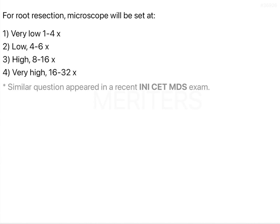For root resection, the microscope will be set at very low (1-4x), low (4-6x), high (8-16x), or very high (16-32x). In dental practice, direct operating microscopes can be configured so magnification goes up to 40x. There are three ranges of magnification: low range, mid range, and high range. In the low range, magnification goes up to 8x.